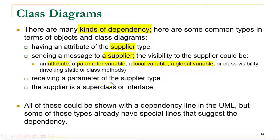One other possibility is when we are receiving a parameter of the supplier type — by supplier type we mean another class. It is possible that we have a function in class A, and that function has a parameter of type class B. In that case, class A depends on class B. If class B does not exist, class A cannot function properly. If class B is no longer there, that function will not work.